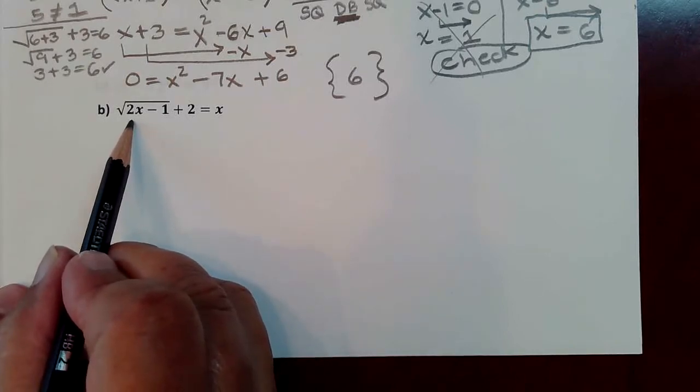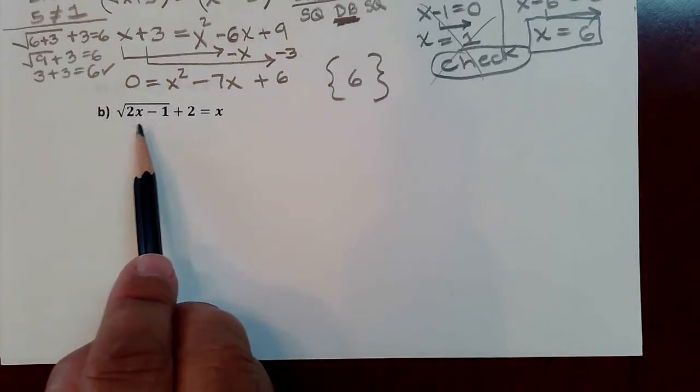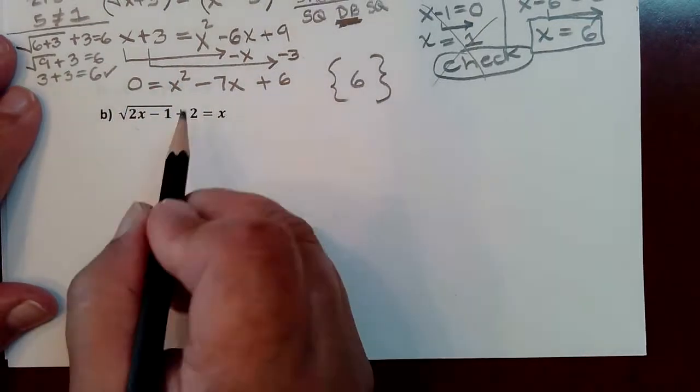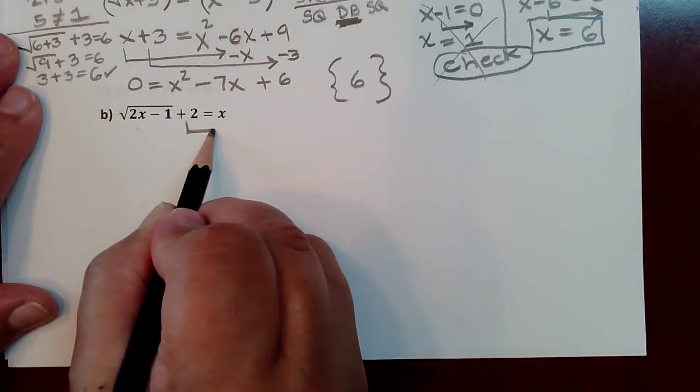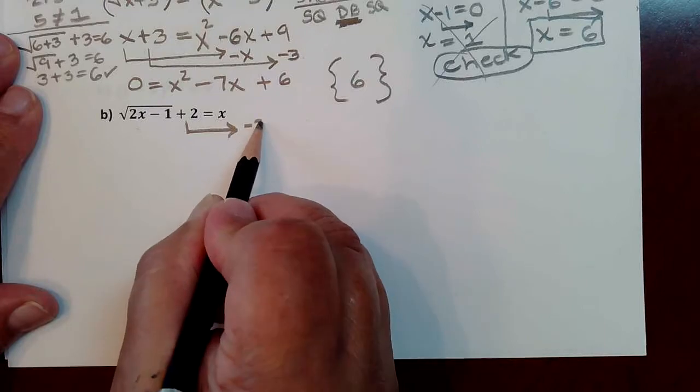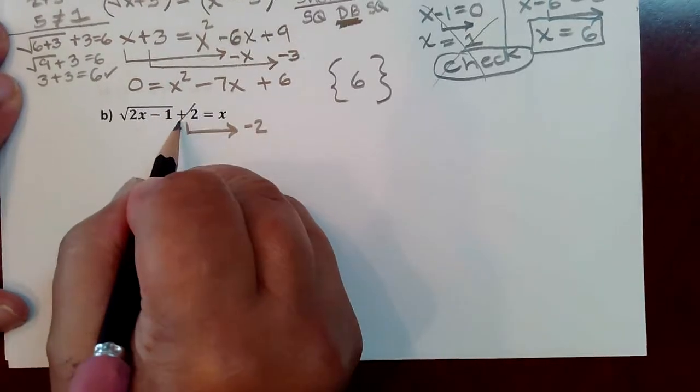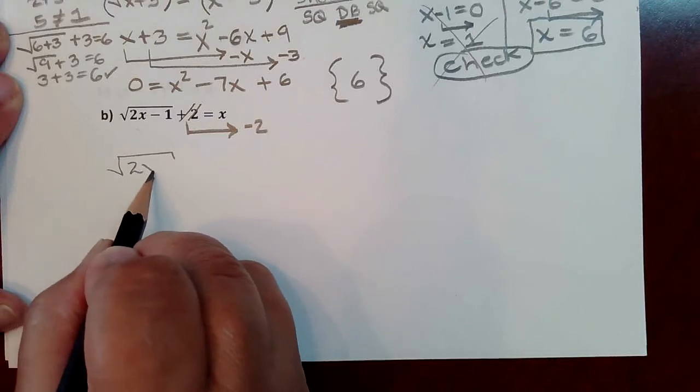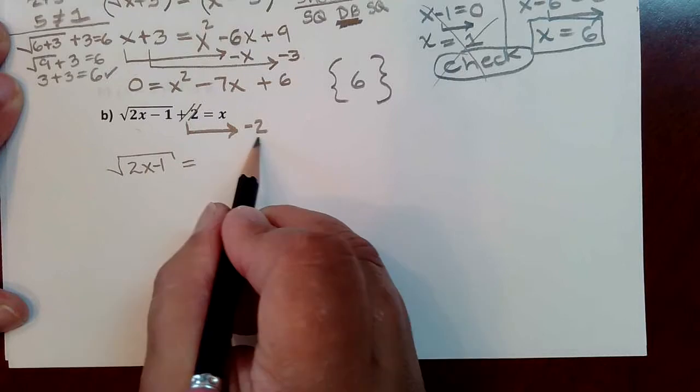There's also a radical here. Again, you must isolate the radical expression before you go squaring to get rid of the square root. Therefore, this has nothing to do with the radical expression because it is not underneath it. And therefore, it needs to come to the other side.